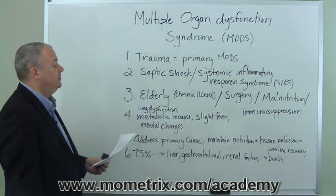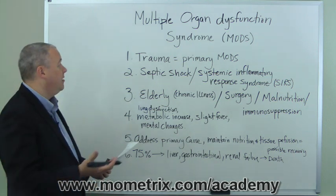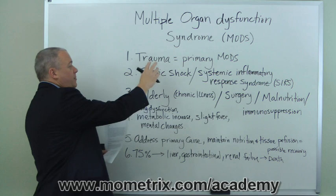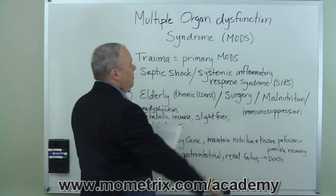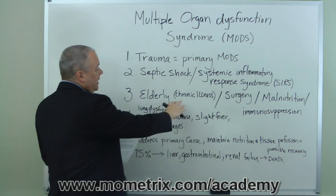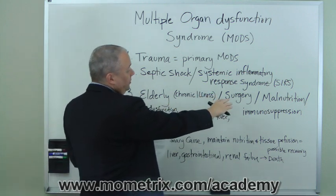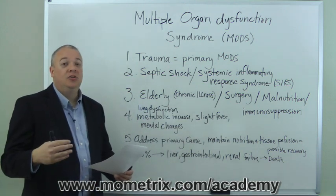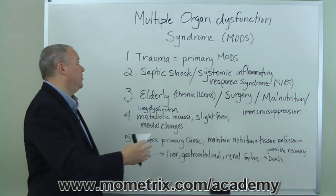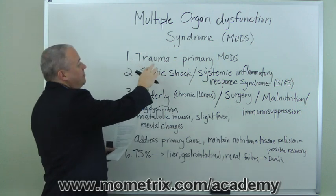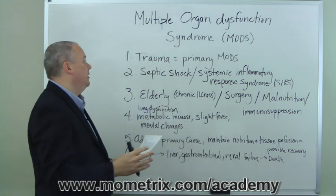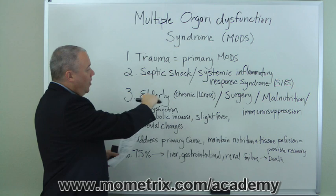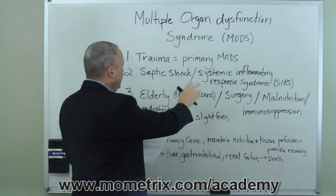Basically, the primary cause of MODS is due to trauma, but there are a lot of secondary things that can lead to Multiple Organ Dysfunction Syndrome. Among those are a response to septic shock, systemic inflammatory response syndrome, in the elderly it can be due to chronic illness, it can be the response to surgery, malnutrition, or immunosuppression. There are many different avenues that can lead to MODS, always remembering that the primary reason is some sort of trauma directly to the organ or to the organs in that region. However, secondarily, it can be the result of all of these other issues related systemically to the body.